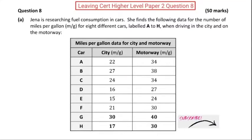Question 8. Gina is researching fuel consumption in cars. She finds the following data. We have two columns — city and motorway — where miles per gallon are evaluated.